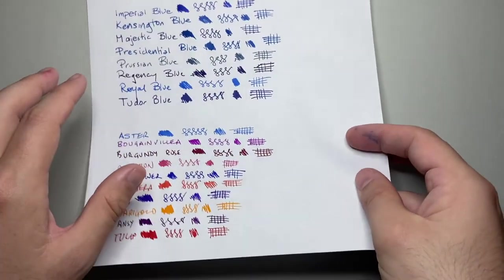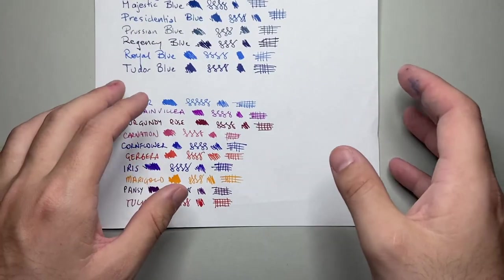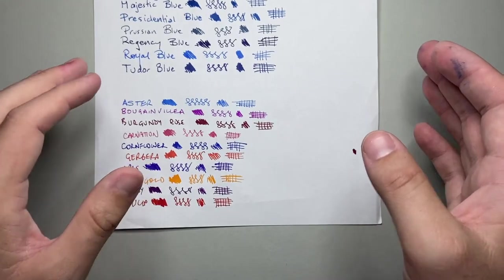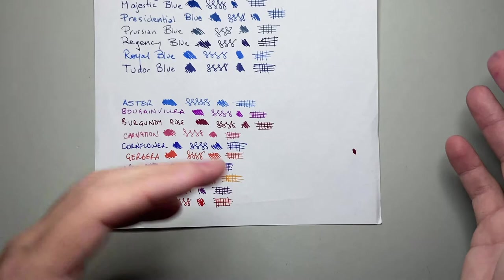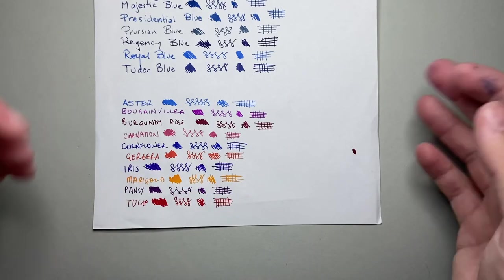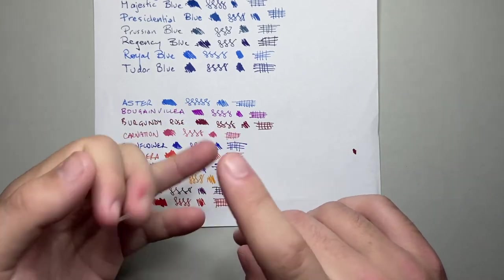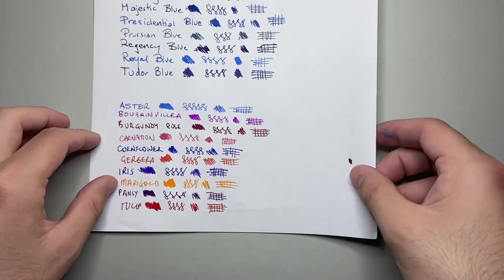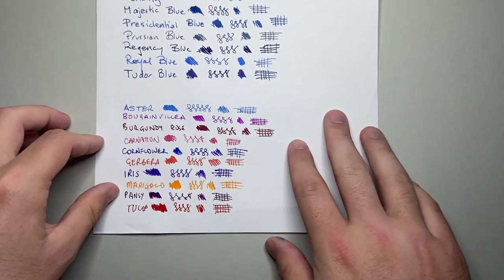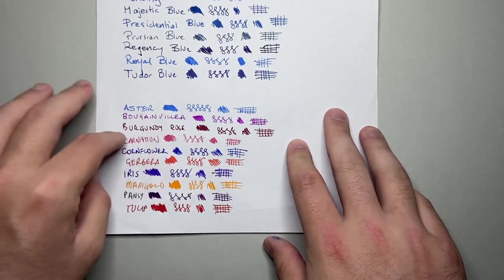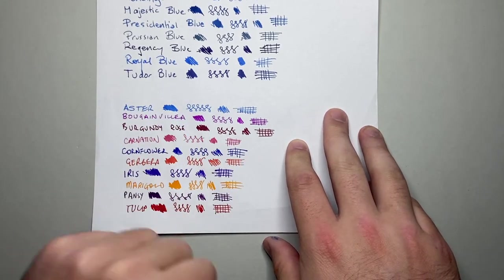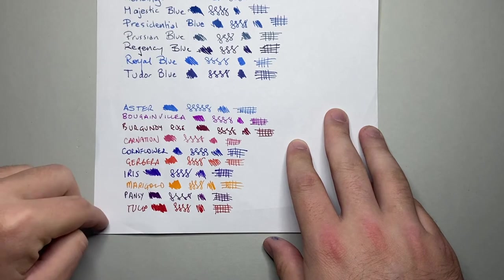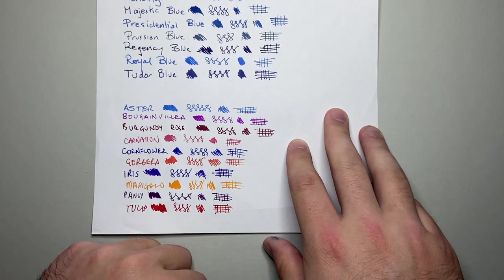But being Diamine inks, they are very safe. And they do perform well on fountain pen friendly paper. You'll see them on Rhodia in a second, you've seen them on Tomoe River, there's no bleeding, there's no feathering, shading and sheen are nice and apparent. But yes, on this copy paper, you can see the colors look great, a little flat perhaps, but they look great. And you know, in a fine nib, with careful use, you could probably get away with it on this paper, if you really needed to.